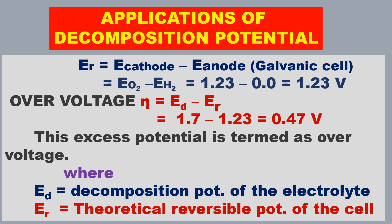What is the application of decomposition potential? It is also called deposition potential and is useful for electroplating — determining how much voltage is required to deposit a metal ion. Another application is that it is used to calculate the over voltage.